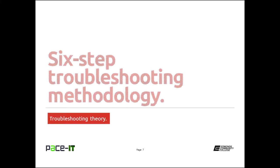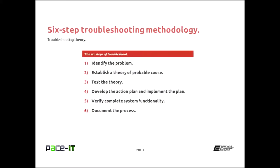Now that we've talked about the importance of having a methodology, let's talk about CompTIA's six-step approach to troubleshooting. Step one is identify the problem. Step two is to establish a theory of probable cause for that problem. Step three is to test your theory of the probable cause. If it proves true, then you move on to step four, which is to develop the action plan to resolve the problem and then implement the plan. Step five is to verify complete system functionality. And step six is to document the process.